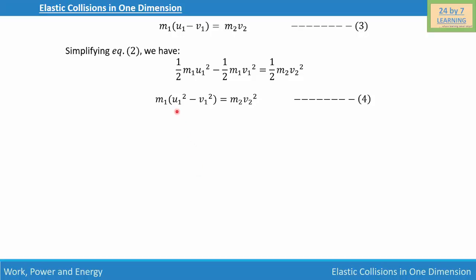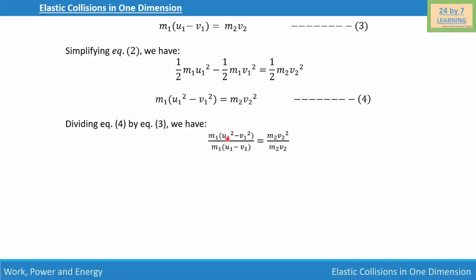Now let's divide equation 4 by equation 3. We write m1(u1² − v1²) / m1(u1 − v1) = m2·v2² / m2·v2. Simplifying this expression, we get u1 + v1 = v2.